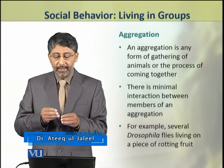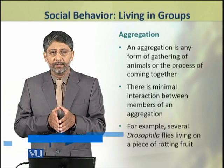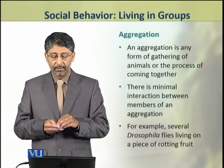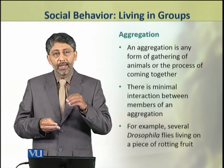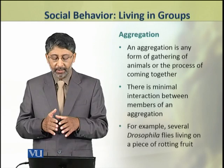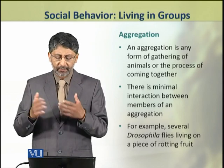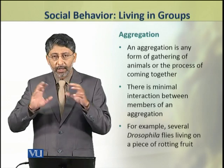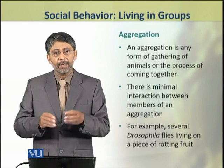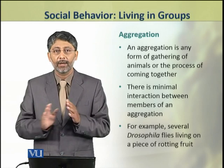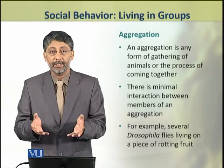An aggregation is any form of gathering of animals or the process of coming together. There is minimal interaction between the members of an aggregation. For example, a rotting fruit can attract several Drosophila flies — they work on their own, there is no social interaction between them. This is an example of aggregation.